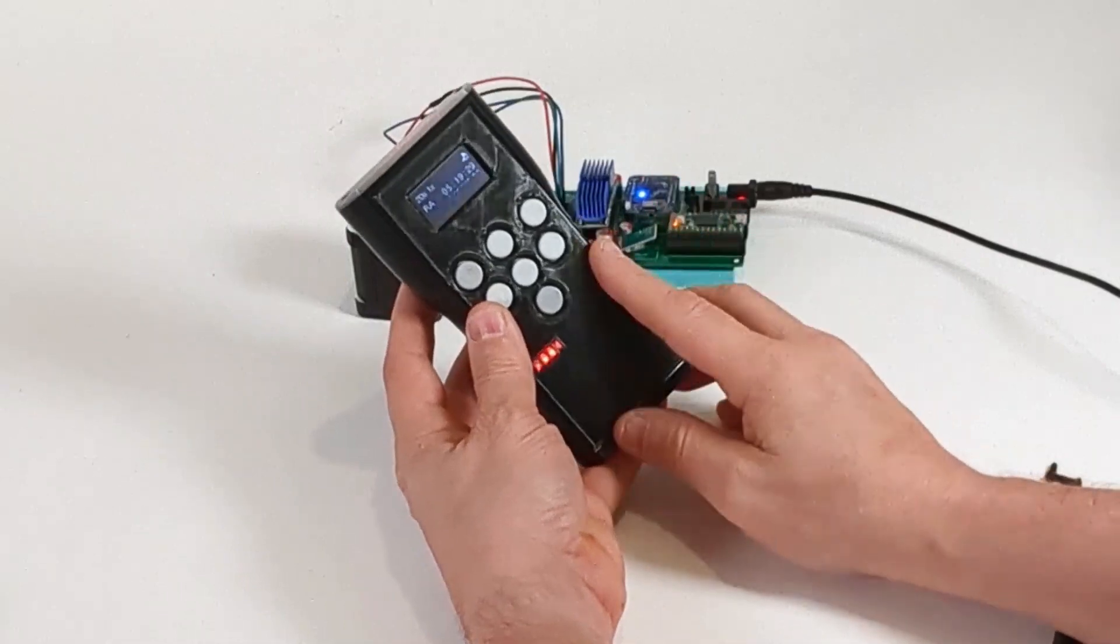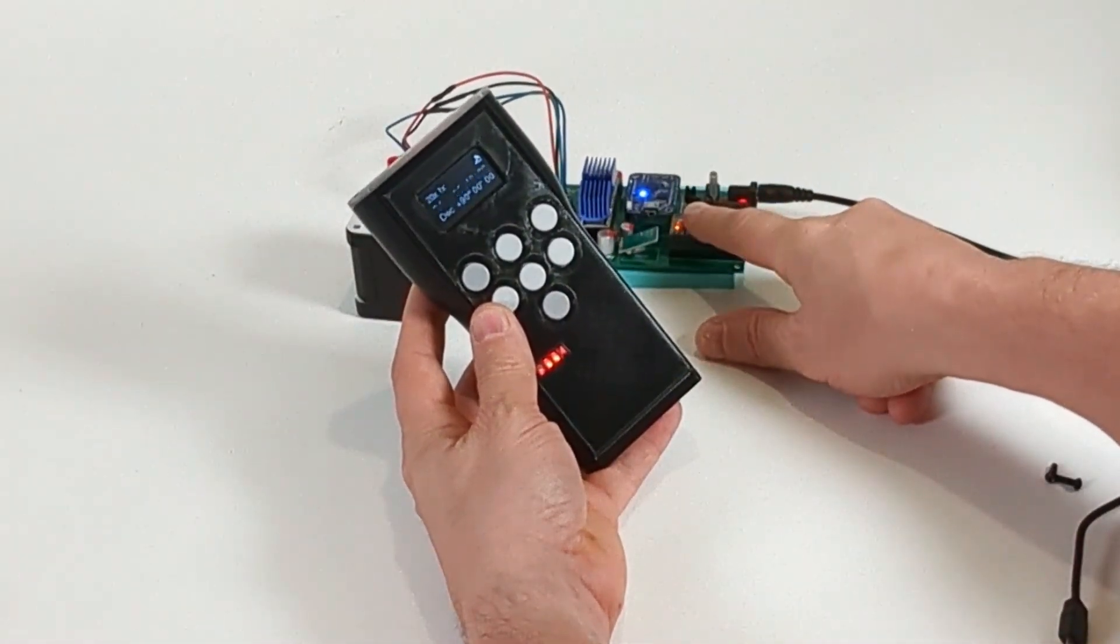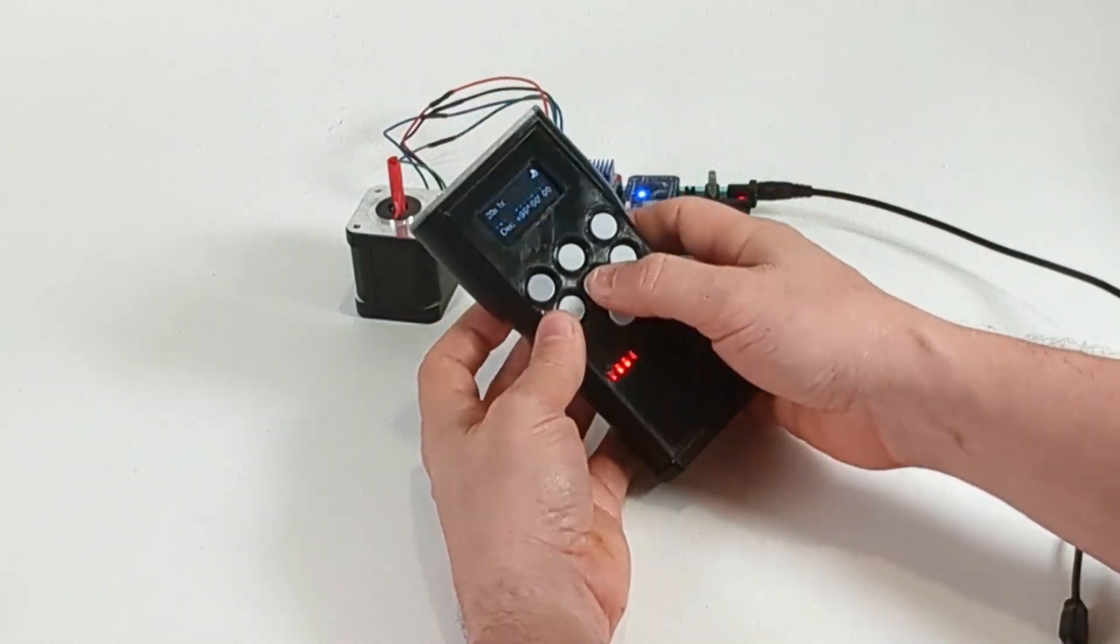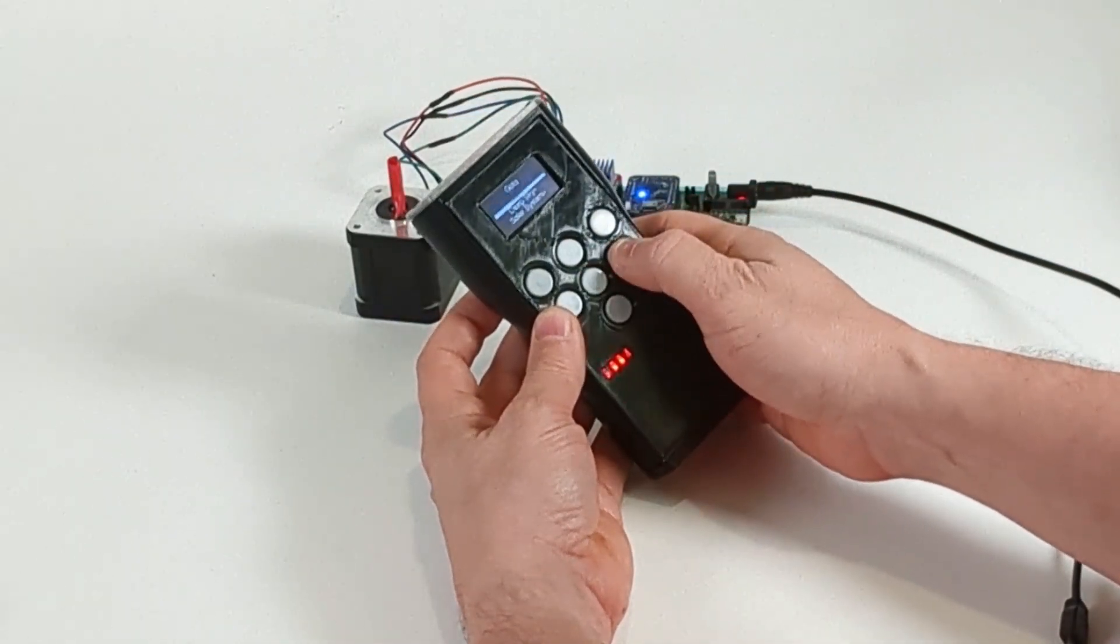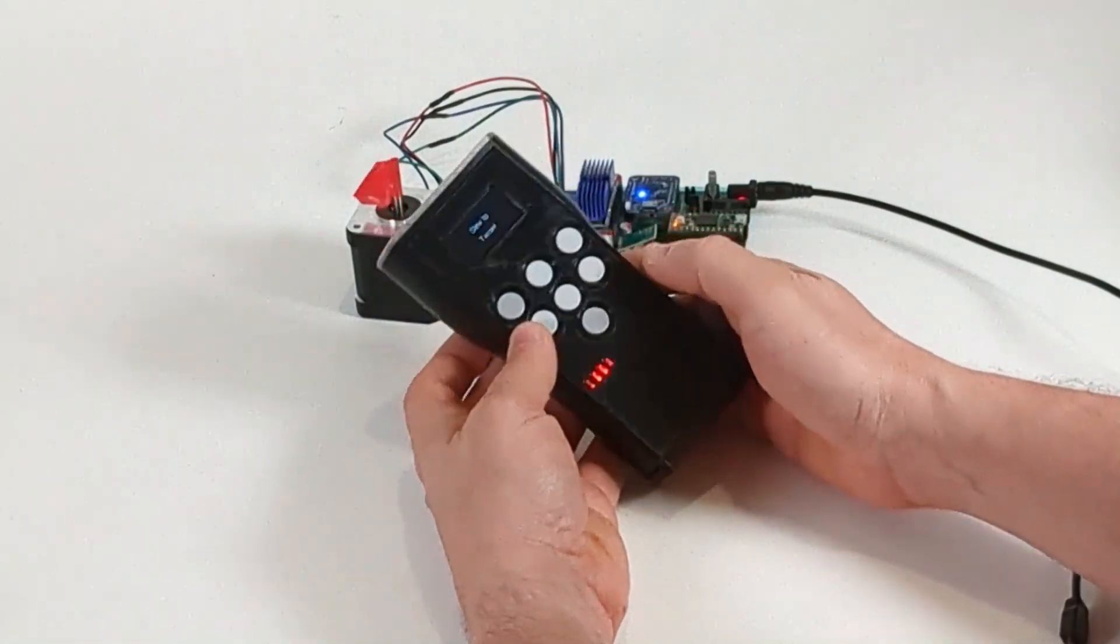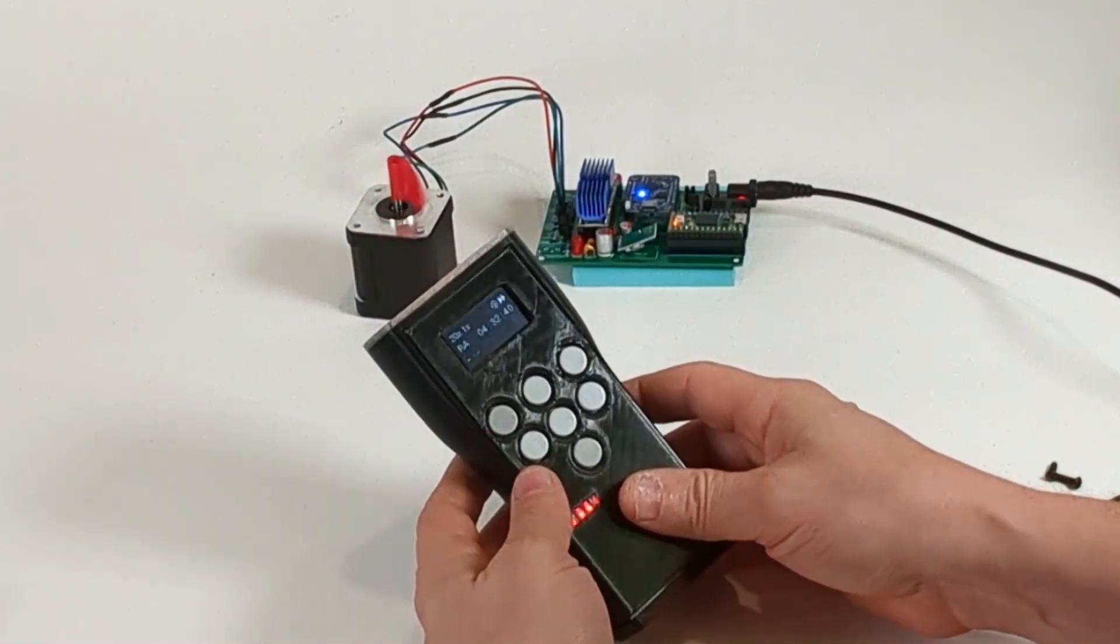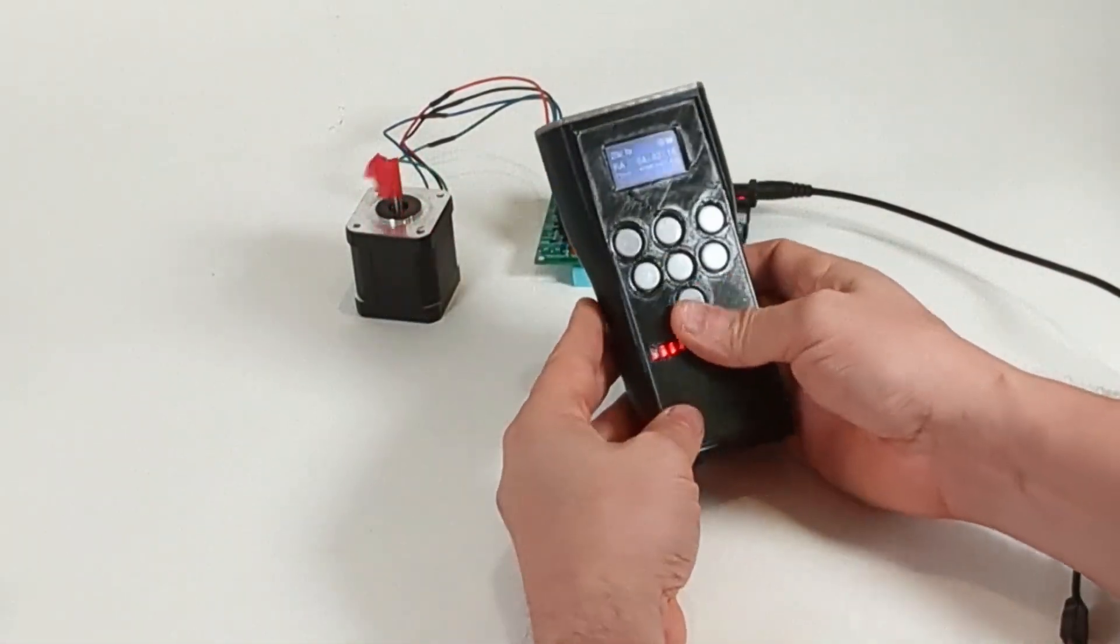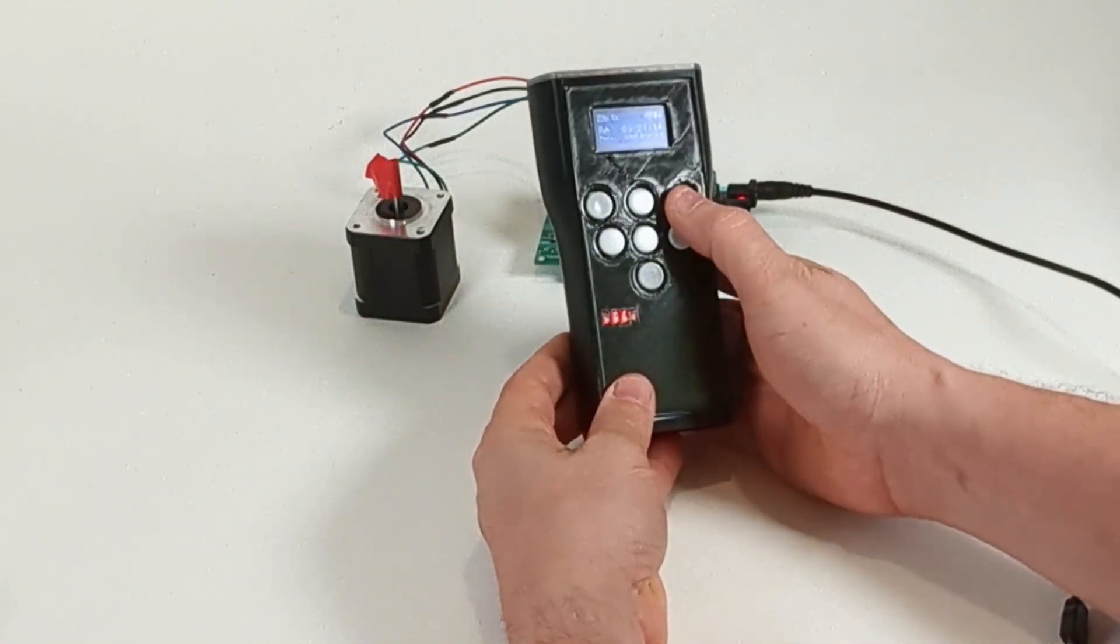So we are now, this ESP32 is now connected to the Wi-Fi network of this OnStep computer. Let's go ahead and we'll just go to a star, a bright star. So you can see we are now controlling it. It's in tracking mode.